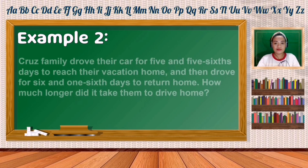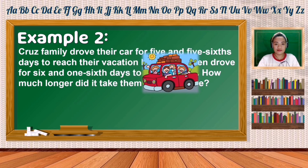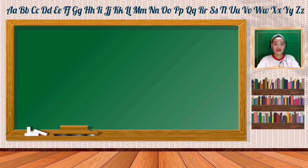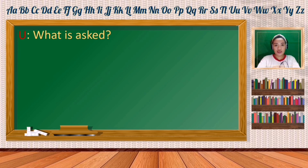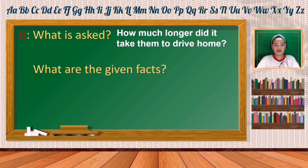Example number two. Cruz's family drove their car for 5 and 5/6 days to reach their vacation home, and then drove for 6 and 1/6 days to return home. How much longer did it take them to drive home? What is asked: how much longer did it take them to drive home? The given facts are 5 and 5/6, and 6 and 1/6.